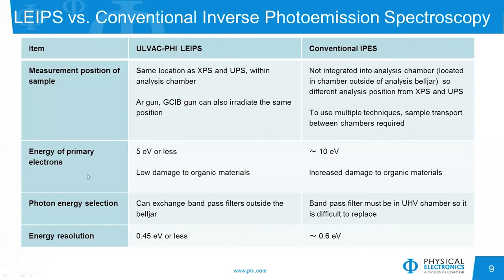The second parameter is the energy of the primary beam striking the surface. In LIPS we use 5 eV or less, whereas in conventional IPS it's typically 10 eV — so there's much more damage to organic materials using that technique. Photon energy selection is also much easier in LIPS because you can change out the bandpass filters in air, rather than in vacuum as required with conventional IPS. The energy resolution is about 0.45 eV or less with LIPS and about 0.6 eV with conventional IPS.